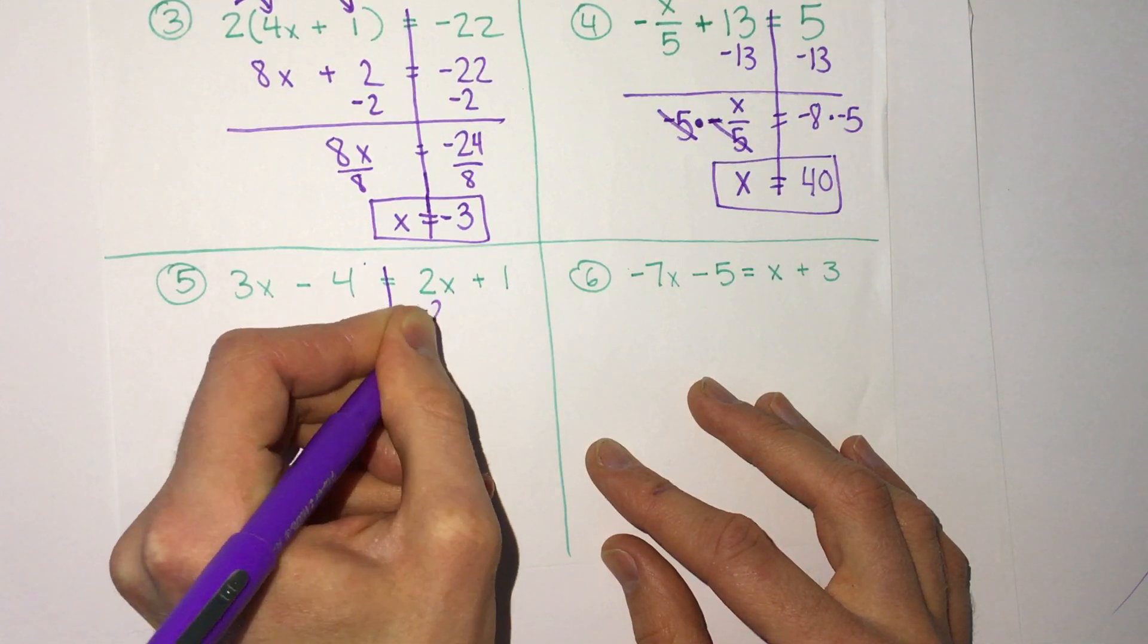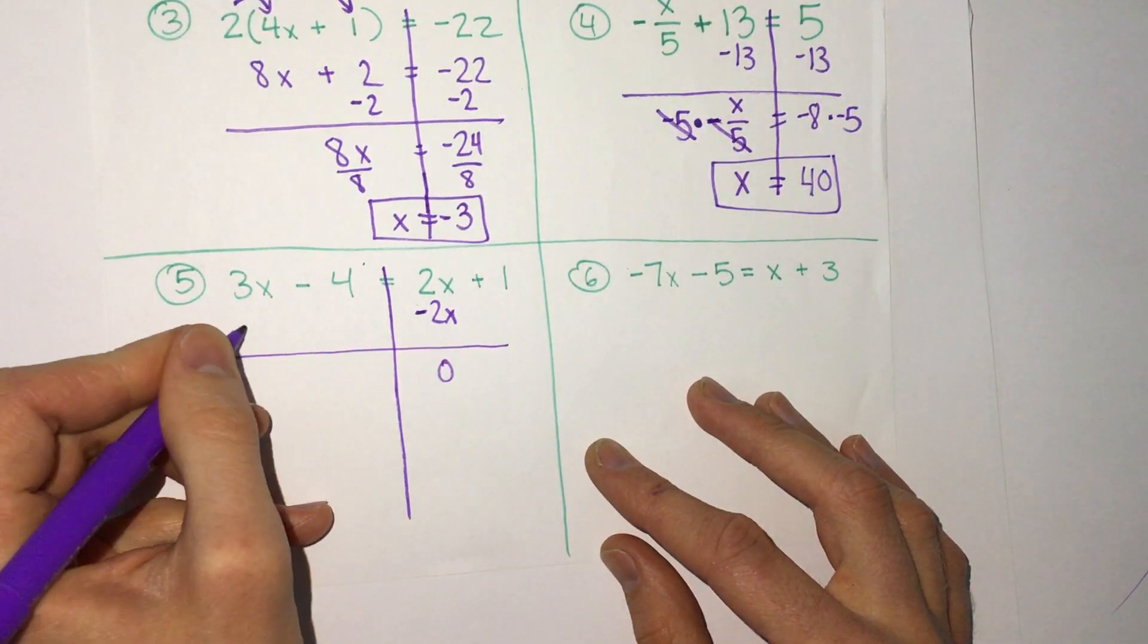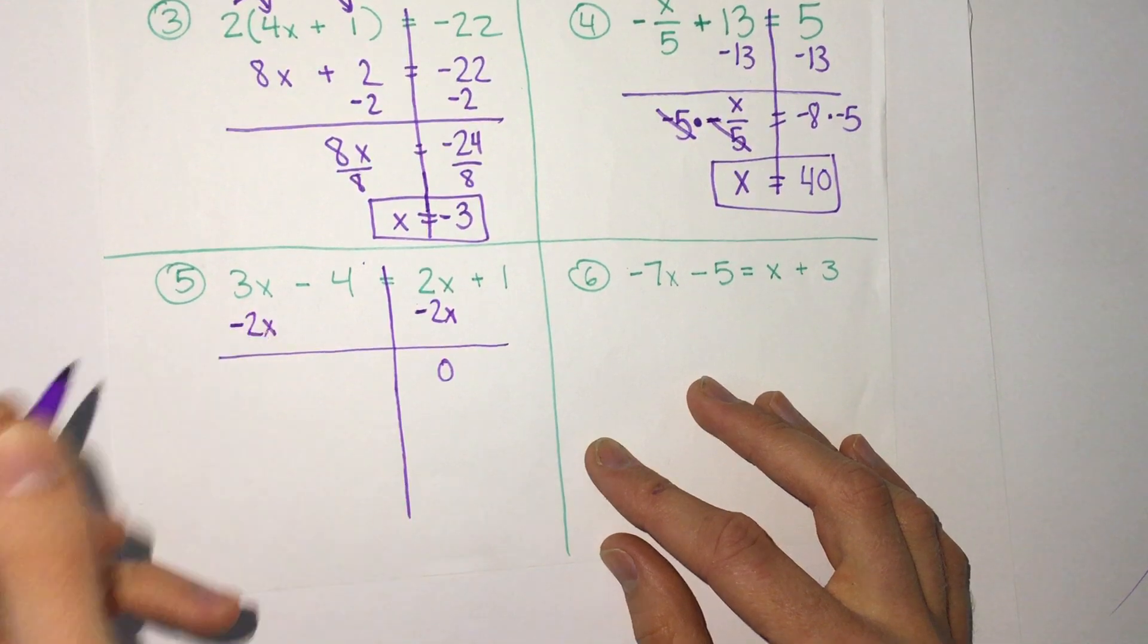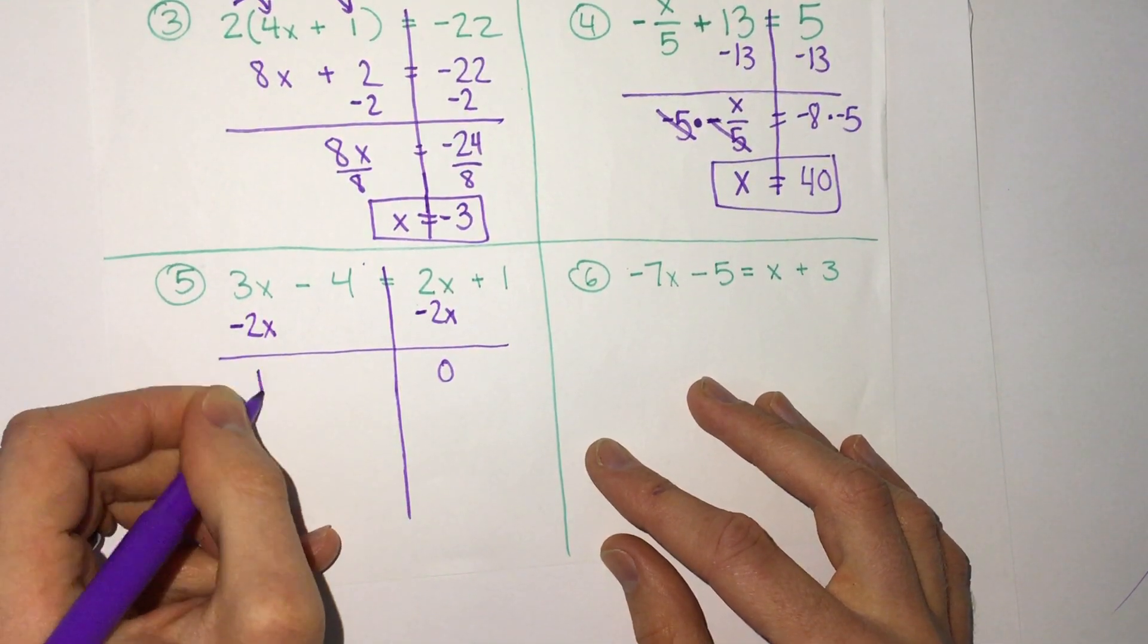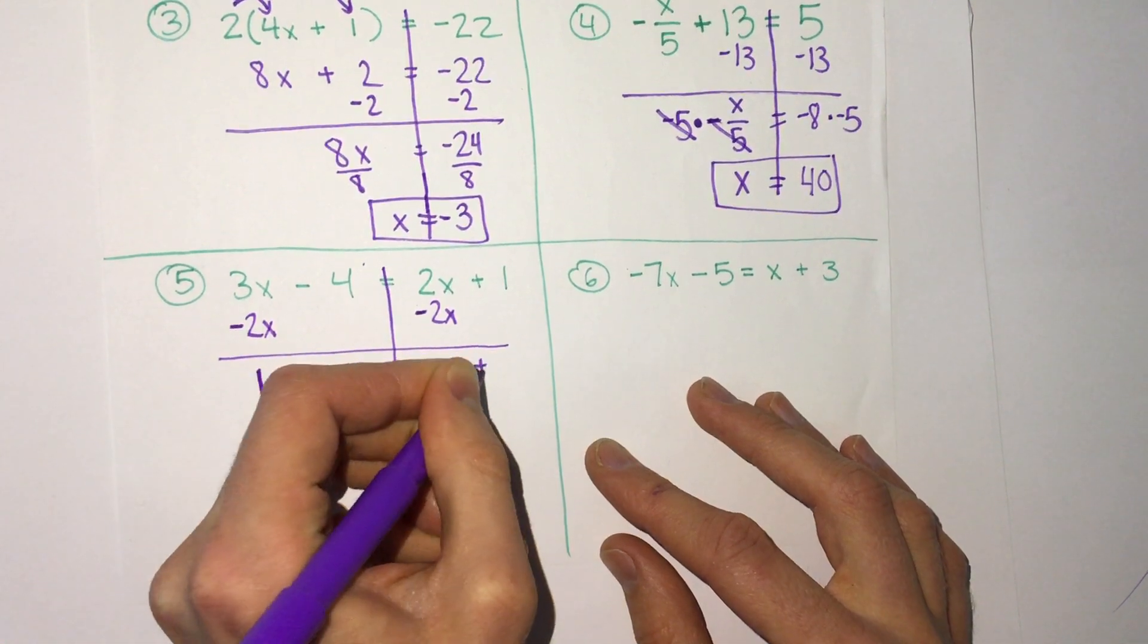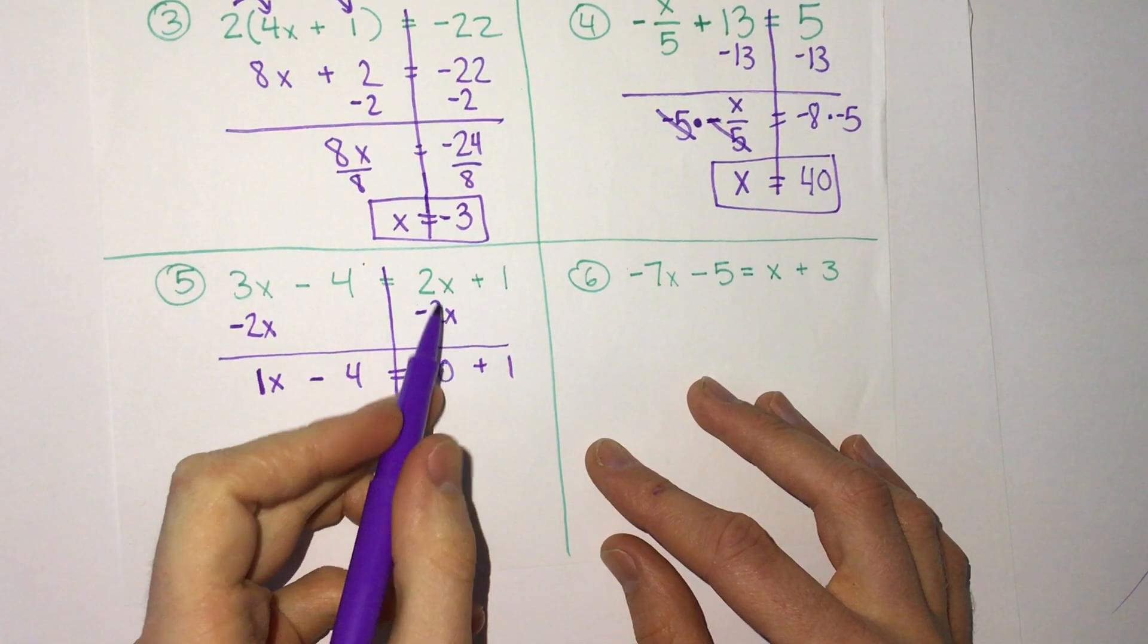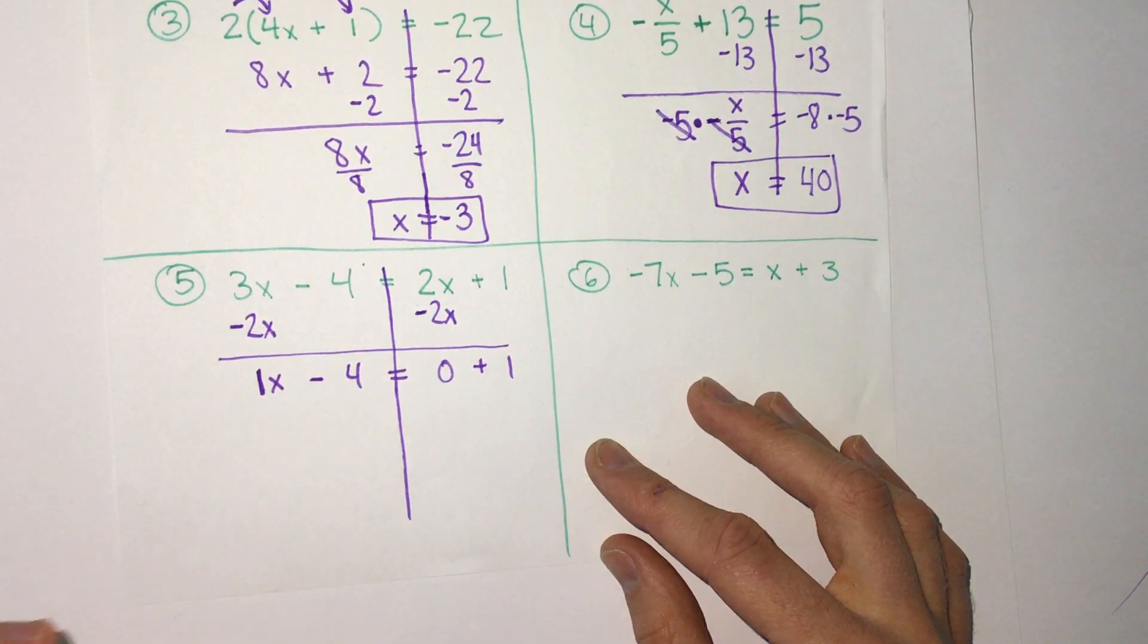2x minus 2x, that is 0. Then we would do the same to the other side. 3x minus 2x, we have 1x, still minus 4, equals 0 plus 1. So remember there's no x anymore because 2x minus 2x is just 0.